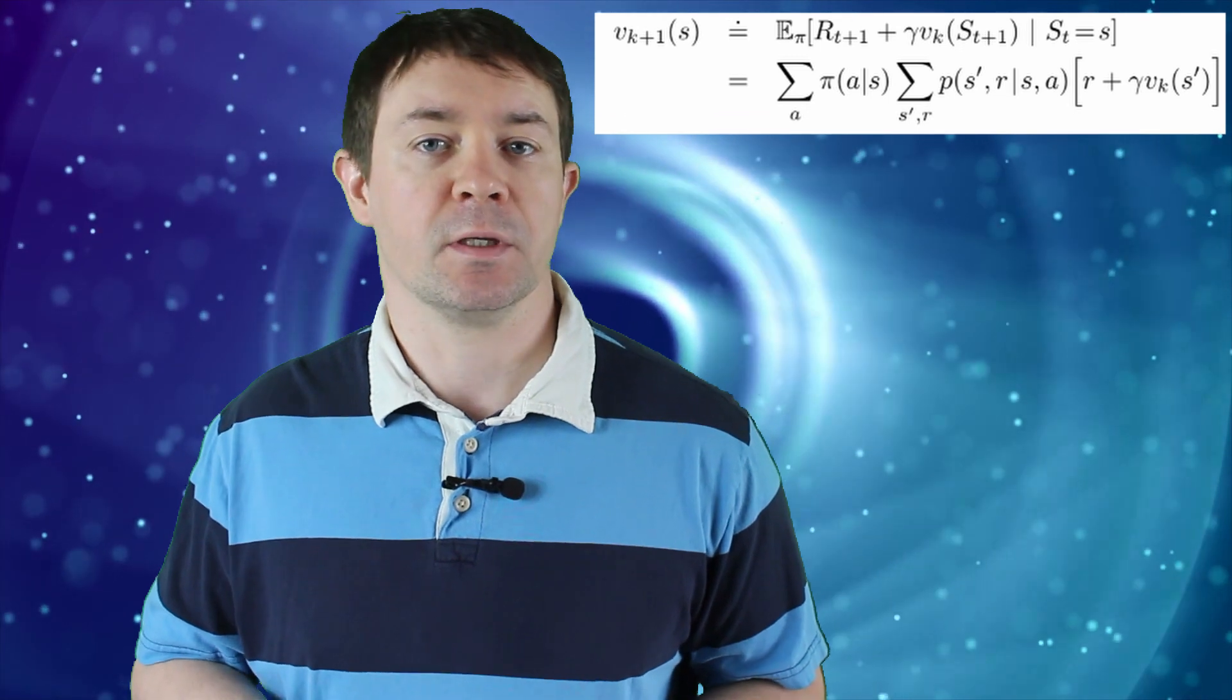If we take advantage of the recursive nature of the Bellman equation it becomes an update rule. So at each step k we have the following equation. This relates each update of the Bellman equation to its prior estimate. So all we have to do is start out with some estimate of the Bellman equation for each state of the environment.